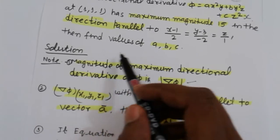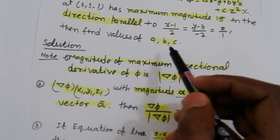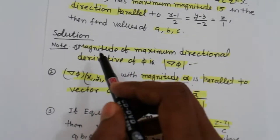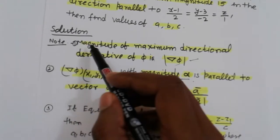First we are finding the constants a, b, c. First we write down some basic information. Note that: